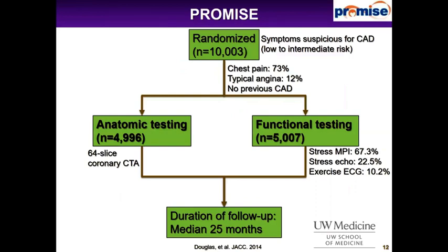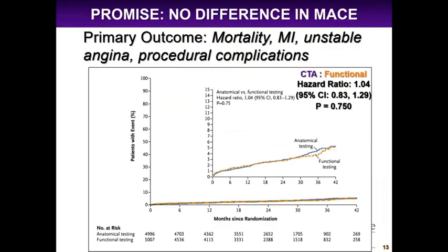One of the pivotal trials in coronary CTA was the PROMISE trial, published in 2014. It's a randomized controlled trial of 10,000 patients at low to intermediate risk with chest pain. They were randomized to anatomic testing with CTA versus functional testing — mostly stress myocardial perfusion imaging with SPECT, some stress echo, and some exercise stress ECG — and followed for two years. The primary outcome was MACE including mortality, MI, unstable angina, or procedural complications, and it showed no difference. Anatomic and functional testing essentially overlapped.